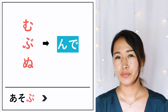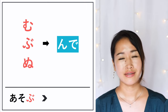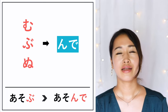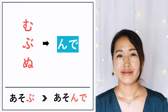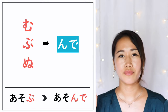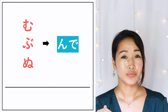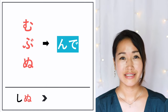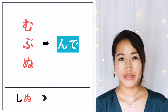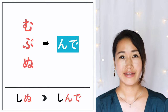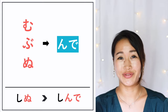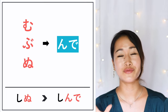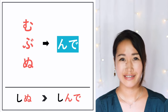How about 'to play and hang out with friends'? 'Asobu' — the TEFORM would be 'asonde'. And the only verb ending with NU is actually 'to die' — 'shinu' — so the TEFORM would be 'shinde'. Never say that to anyone, okay? But the TEFORM of shinu is shinde.